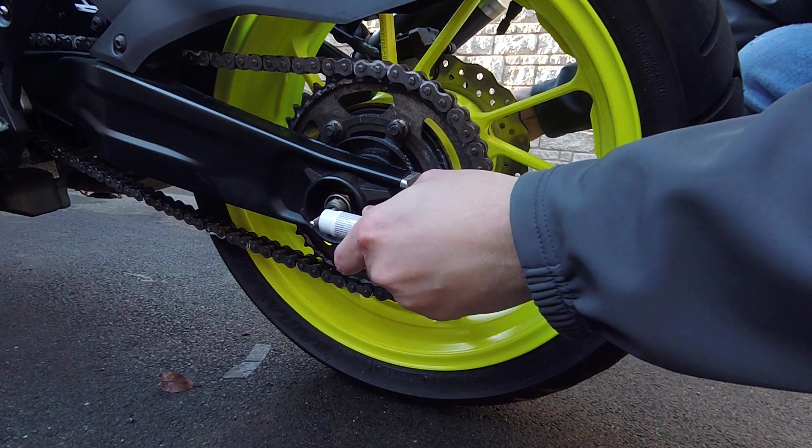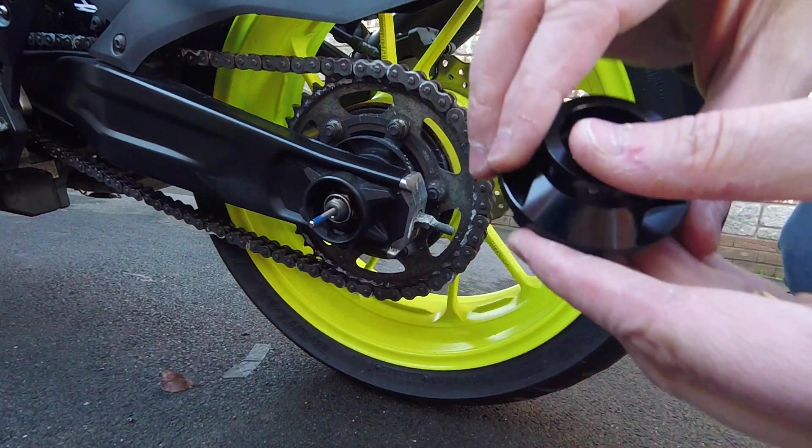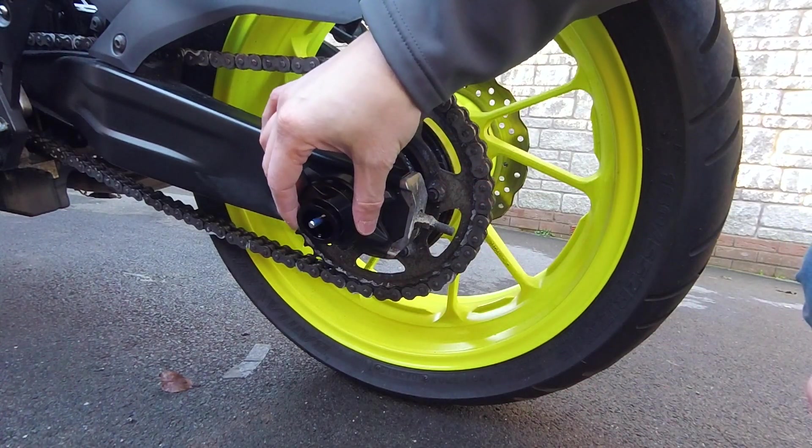And then on the other side, you want to put a bit more thread lock. Then I put my grub screw on the bottom of the bracket because I didn't want to be able to see it.